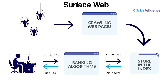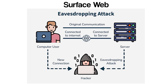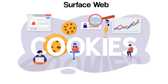Security and privacy are also important aspects of the Surface Web. Websites that use HTTPS encrypt data transferred between the user's browser and the server, providing a basic level of protection against eavesdropping and tampering. However, not all websites offer the same level of security, and users can be exposed to risks such as phishing, malware, and data tracking. Cookies and other tracking technologies are commonly used to collect user data for analytics and advertising purposes, raising concerns about online privacy.